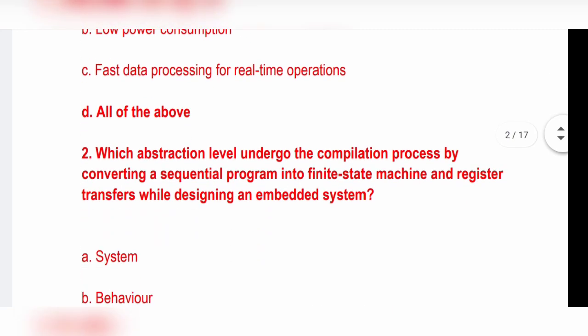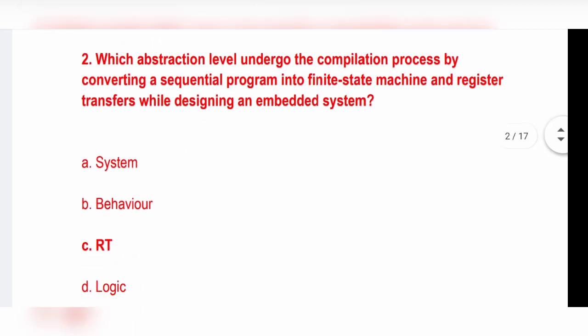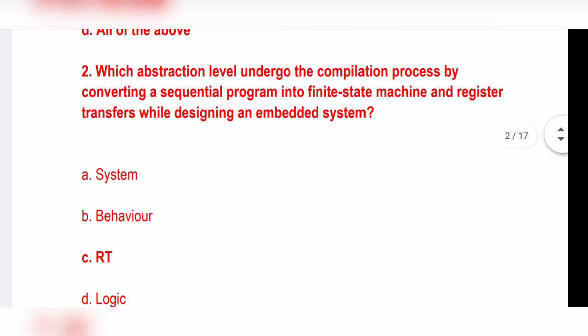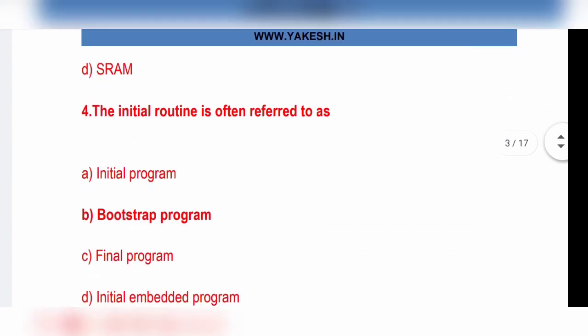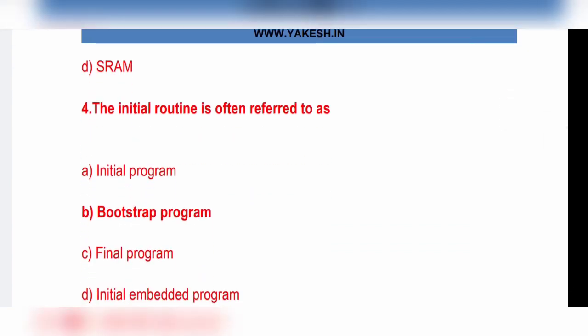Next question: Which abstraction level undergoes the compilation process by converting a sequential program into a finite state machine and register transfer while designing an embedded system? Option C, RTL, is the correct answer. It retains its content when power is removed. What type of memory is this? Non-volatile memory, option B. The initial routine is often referred to as option B, bootstrap program, is the correct answer.